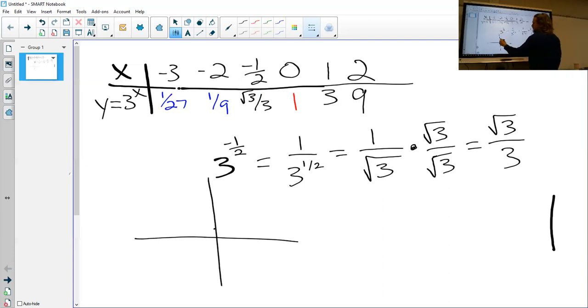So we've got 0, 1; 1, 3; and 2, 9. This is kind of an approximation. On the other side, negative 2, 1 over 9. And negative 3, 1 over 27. And we get something that kind of looks like that.